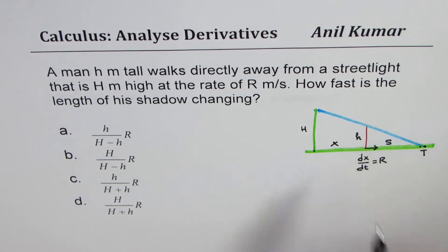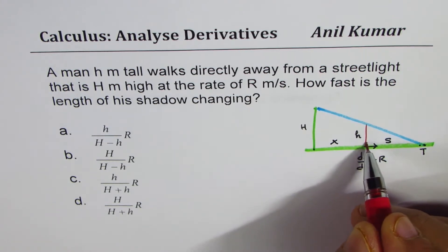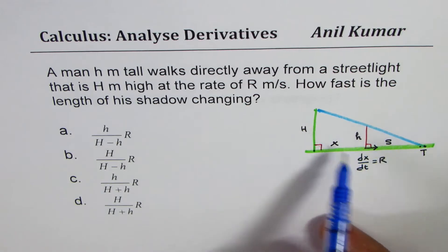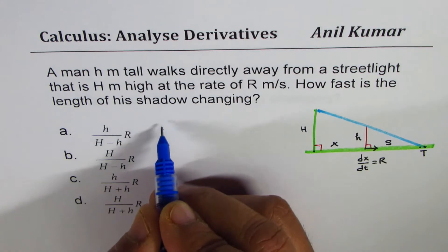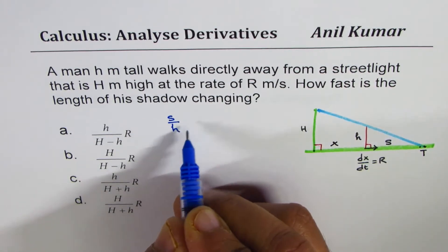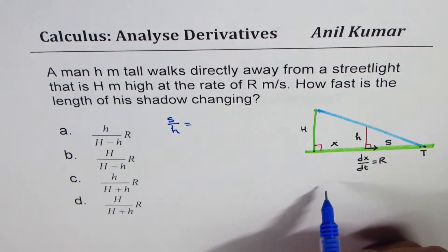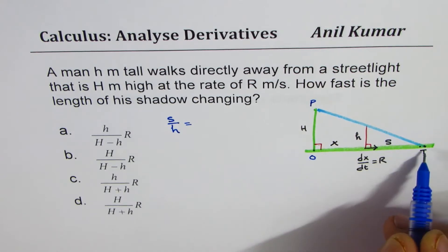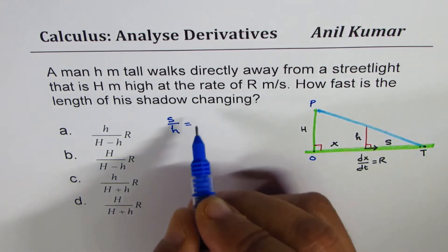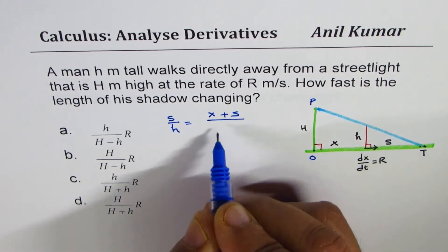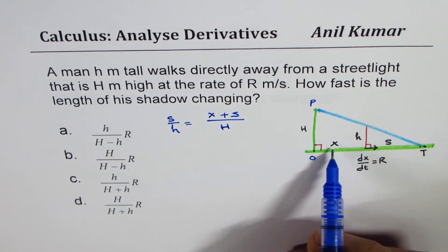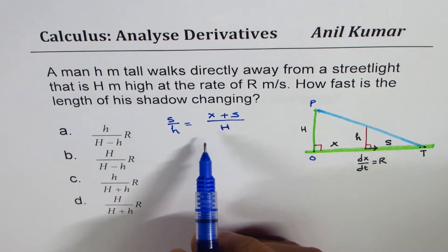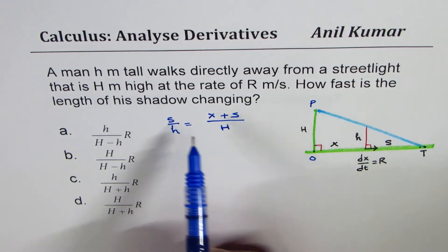We have two similar triangles here — one small and one large. We can form our equation using these similar triangles. The length of the shadow s over small h (the small triangle) is similar to the big triangle, which gives s/h equals (x + s)/H. Here x is the total distance from the pole to the person, and x + s goes from the pole to the tip T. Note that x and s are changing, but the heights H and h are constant — that is important to understand.